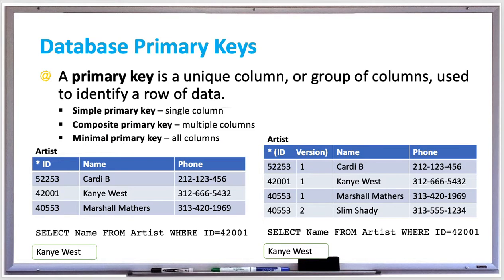A primary key is a unique column or a group of columns used to identify a row of data. When creating a table using SQL, specify which column or columns you want to be the primary key. Primary key values cannot be null and they must be unique to identify at most one row.